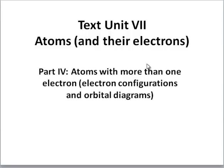This is the fourth lecture for text unit 7. At this point we are ready to talk about atoms with more than one electron, and the particular topic of this lecture is electron configurations and orbital diagrams.